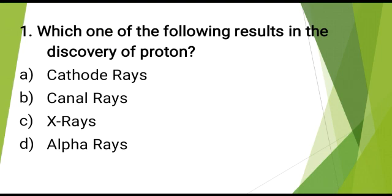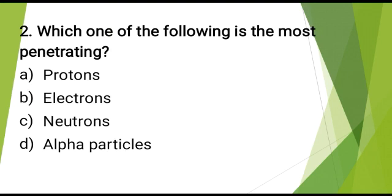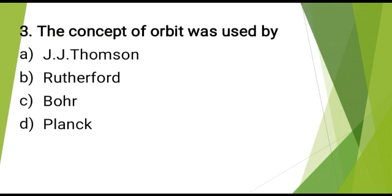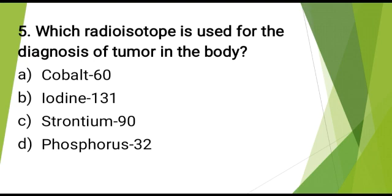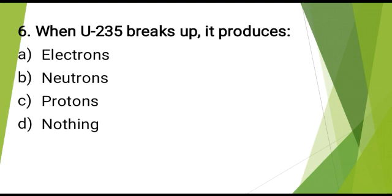Which one of the following results in the discovery of the proton? Which radioisotope is used for the diagnosis of tumor in the body? The correct answer is: iodine-131. When U-235 breaks up, it produces? The correct answer is: neutrons.